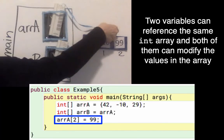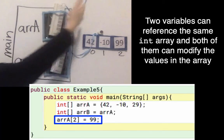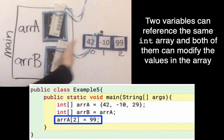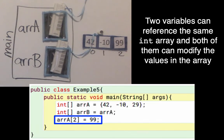Say I changed arrA to later reference some other array, it wouldn't change the fact that arrB is referencing that same array. The big picture is that two references can reference the same int array, and both of them can modify the values in that array.